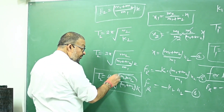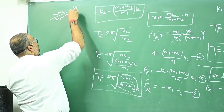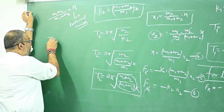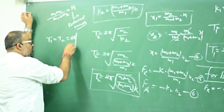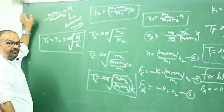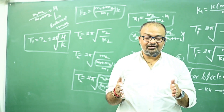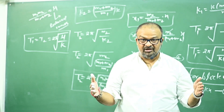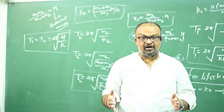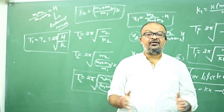Notice that T1 equals T2 — both can be written as 2π √(μ/k), where μ is the reduced mass, and μ = M1·M2/(M1+M2). Importantly, when you compress the blocks and release them, both blocks oscillate with the same time period irrespective of their individual masses.